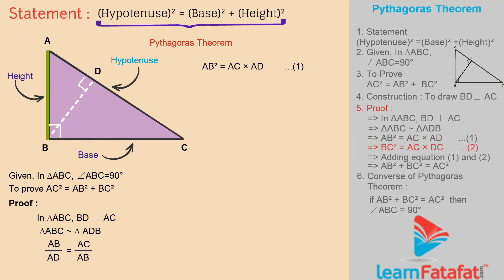Similarly, triangle ABC is similar to triangle BDC. Therefore, BC² equals AC times DC. This is equation 2.